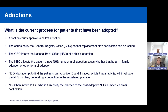The National Back Office will attempt to trace the pre-adoptive NHS number to prevent duplicates. More often than not they will find the pre-adoptive identity, invalidate it, and a deduction will be sent to the registered practice. The National Back Office will then inform PCSE of the new identity and pre-adoptive identity, and PCSE will pass that information on to the practice via email.